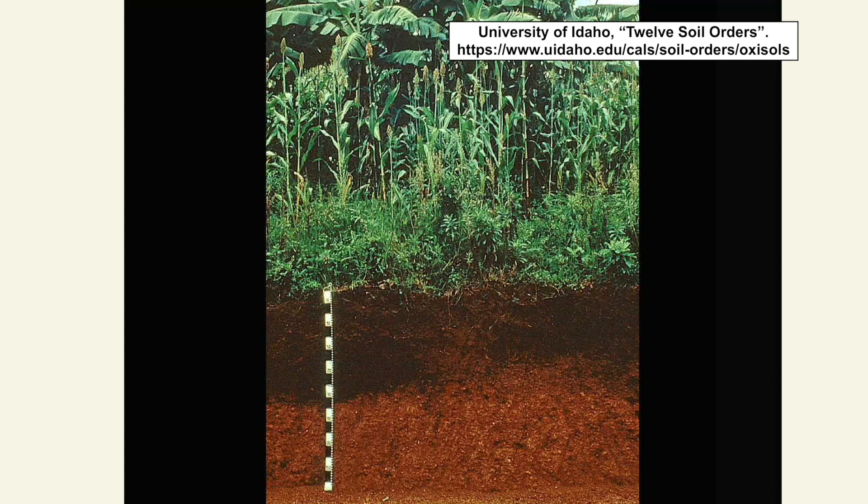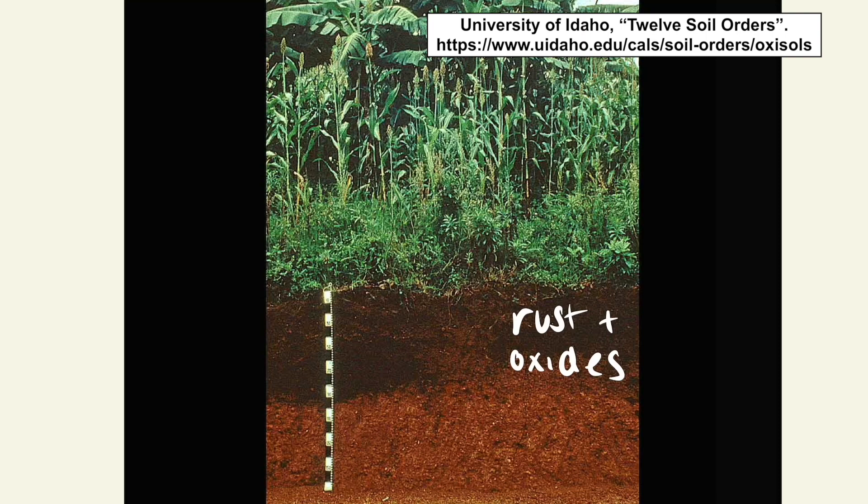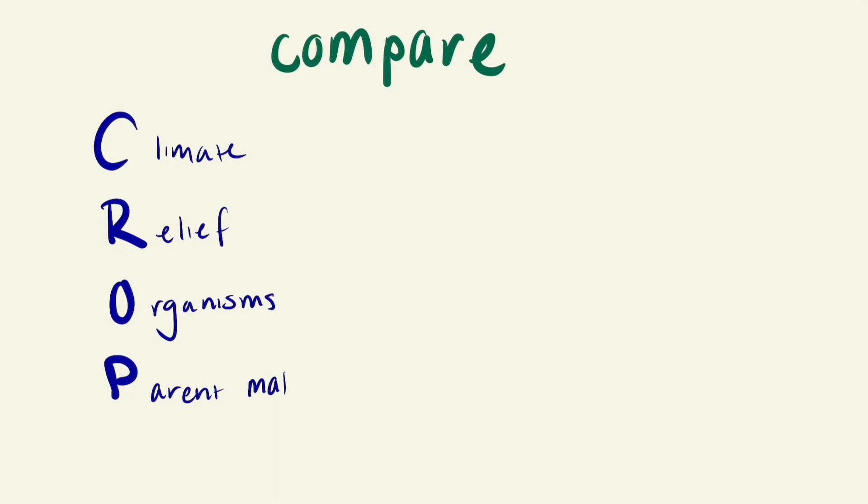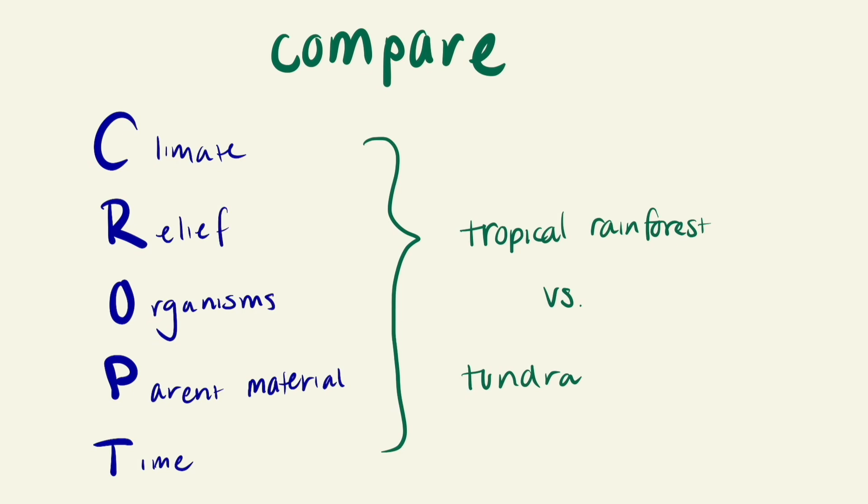Which of the soil factors differs between a tundra and a tropical rainforest? Are there multiple factors that change? If you chose any of our soil factors, you're absolutely correct. In the real world, all of these factors are interconnected.